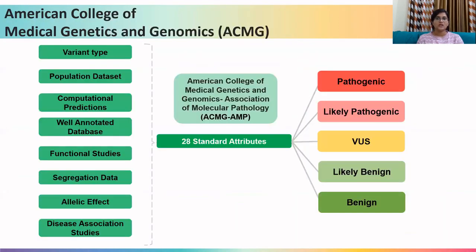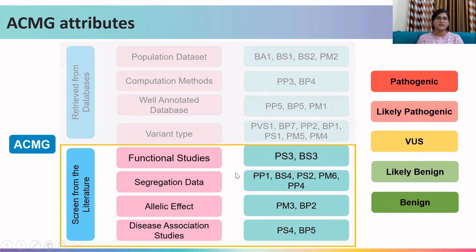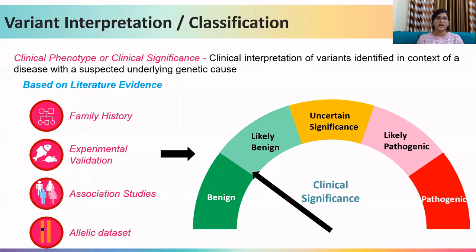As we understood in the previous week, one globally accepted standard way to do this is to follow a set of standard guidelines led by the American College of Medical Genetics and Genomics and Association of Molecular Pathology. These guidelines involve a set of 28 attributes which can be assigned on the basis of variant type, allelic frequency in different populations, computational predictions to understand the effect of variants, and clinical implications by well-annotated databases. A few of these attributes can also be assigned using literature or scientific publications, such as functional studies, segregation data, allelic effect, and disease association studies around the variant. Today we are going to understand how to screen the literature and mine for such evidences to annotate and classify variants as benign or pathogenic.